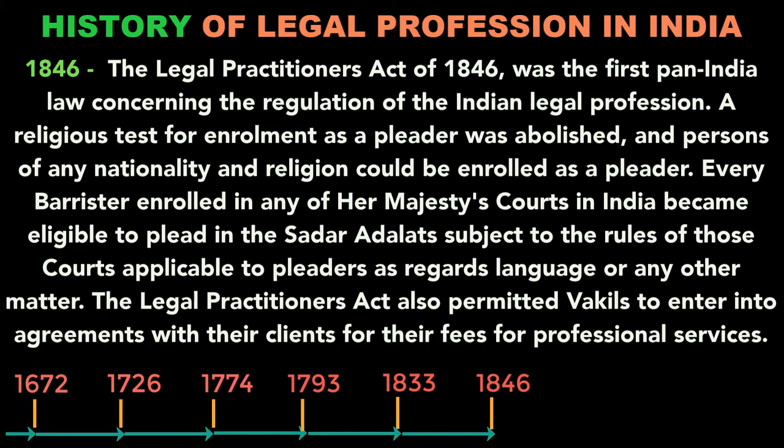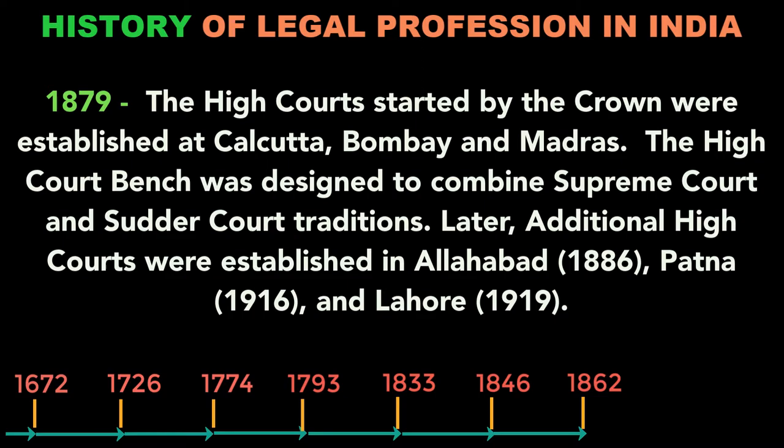The next important year was 1862. The High Courts started by the Crown were established at Calcutta, Bombay, and Madras. The High Court bench was designed to combine Supreme Court and Sadar Court traditions. Later, additional High Courts were established in Allahabad in 1886, Patna in 1916, and Lahore in 1919.